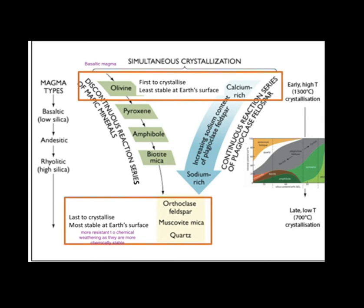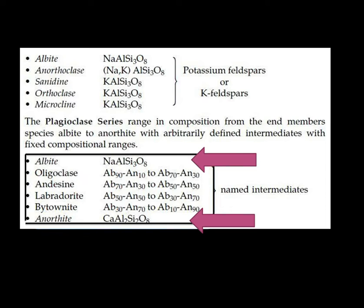On the continuous series side, we have the solid solution series of plagioclase feldspar. Plagioclase feldspar is not a single mineral — it's a group of minerals with similar chemical composition and atomic structure. This solid solution series has two end members: a sodium-rich end member called albite and a calcium-rich end member called anorthite. Minerals in between have a mixture of sodium and calcium. The full solid solution sequence is: albite, oligoclase, andesine, labradorite, bytownite, and anorthite. Within this solid solution, there is only exchange of ions between the minerals.